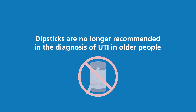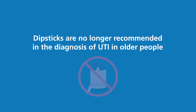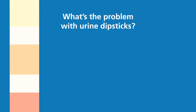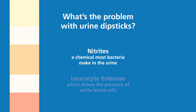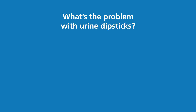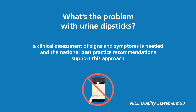Urine dipsticks are no longer recommended in the diagnosis of suspected UTI in older people. Dipsticks cannot tell the difference between bacteria that are causing an acute infection and those that are living in the urine harmlessly. When any bacteria are present in the urine, the dipstick will usually be positive for nitrites and leukocyte esterase. There may also be other markers such as protein and glucose, which are unrelated to infection but often present in older people for other reasons. None of these markers tell us whether there is actually a urinary tract infection that may require antibiotics. For this, a clinical assessment of signs and symptoms is needed, and the National Best Practice Guidelines support this approach.